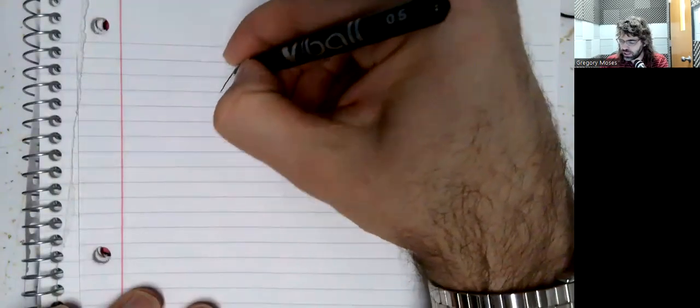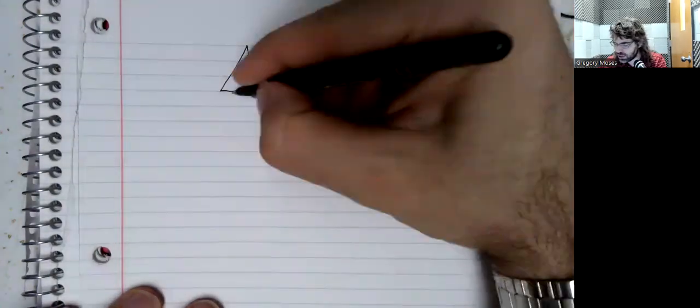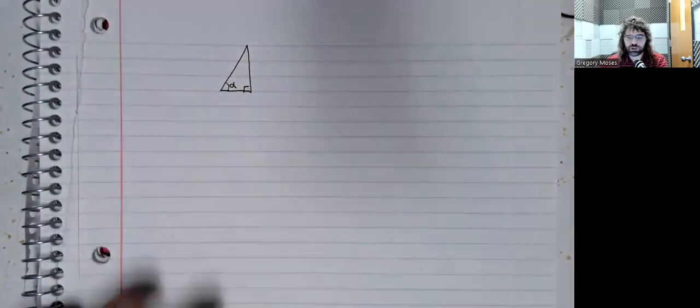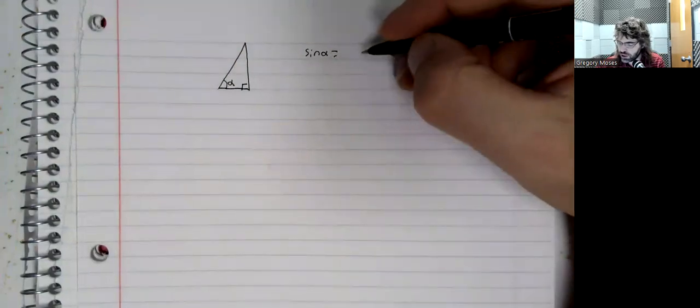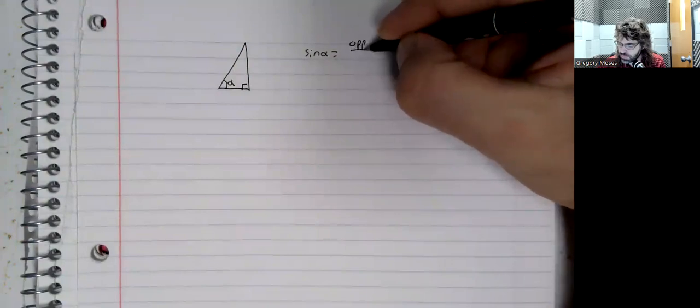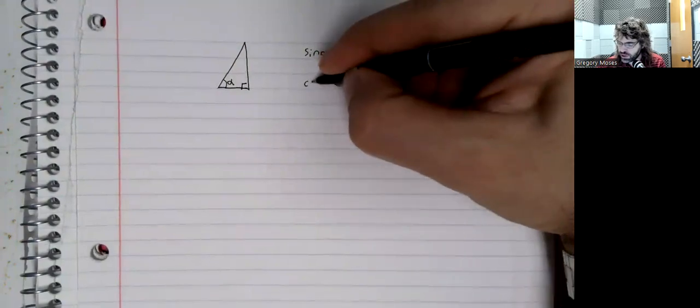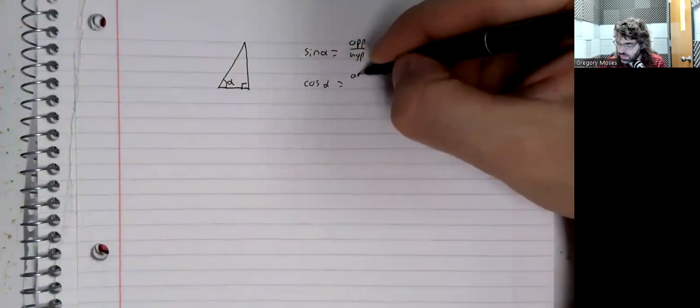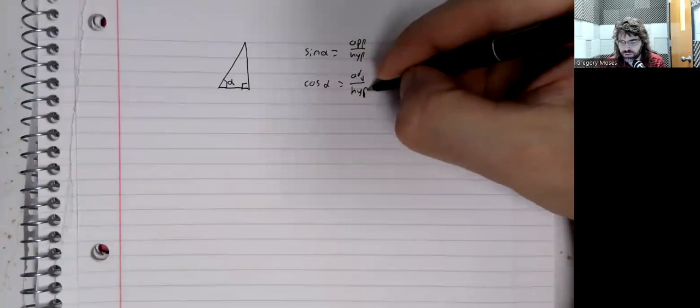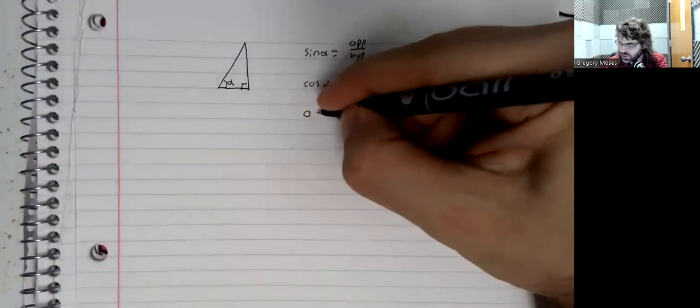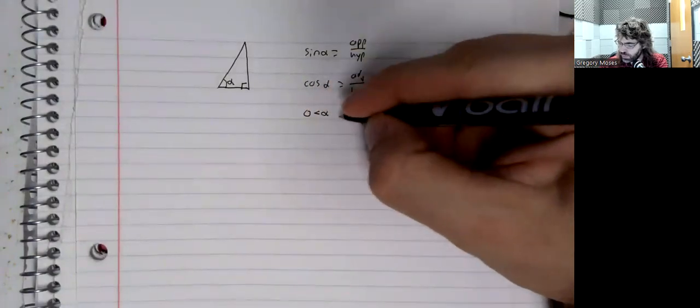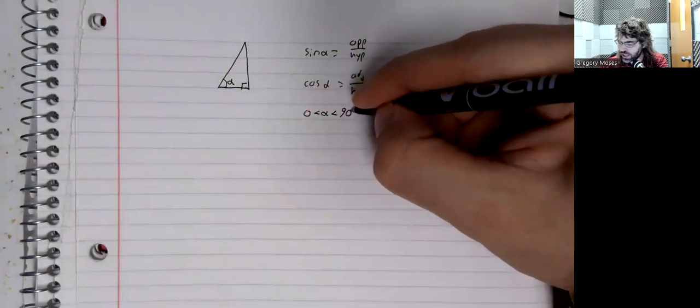Because we've defined the sine and the cosine in terms of right triangles. Here's our 90 degree angle. Here's a different angle. We've defined the sine of alpha and we have defined the cosine of alpha.